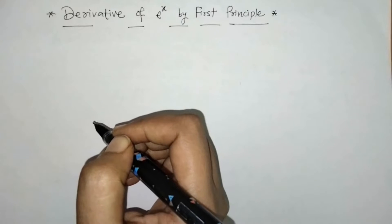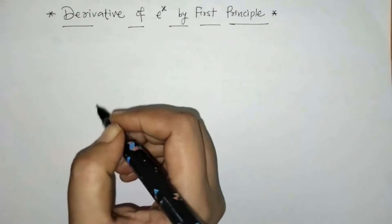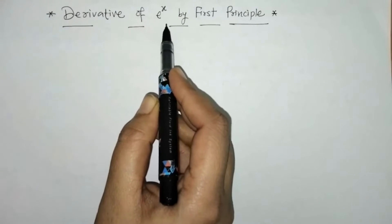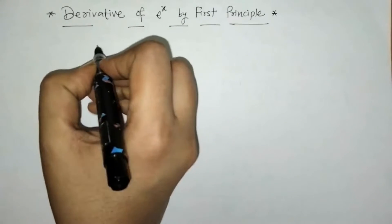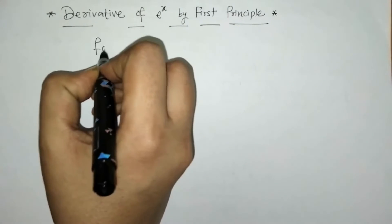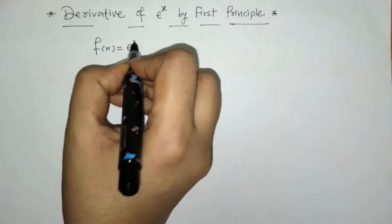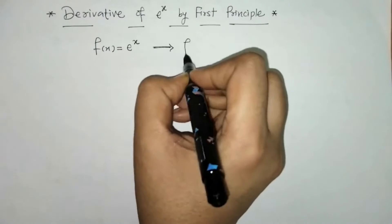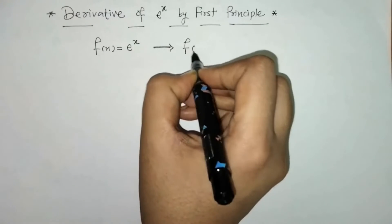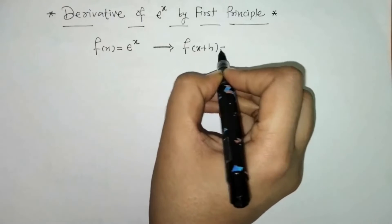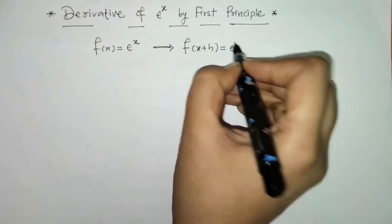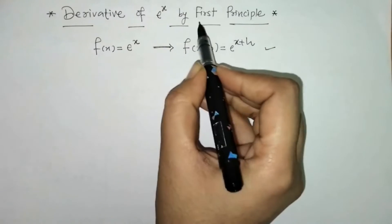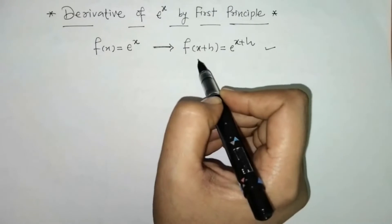Hello everyone, welcome to Unlock Maths. Today we have to find the derivative of e raised to x by first principle. So here we write down f(x) = eˣ, which implies f(x + h) = e raised to (x + h).